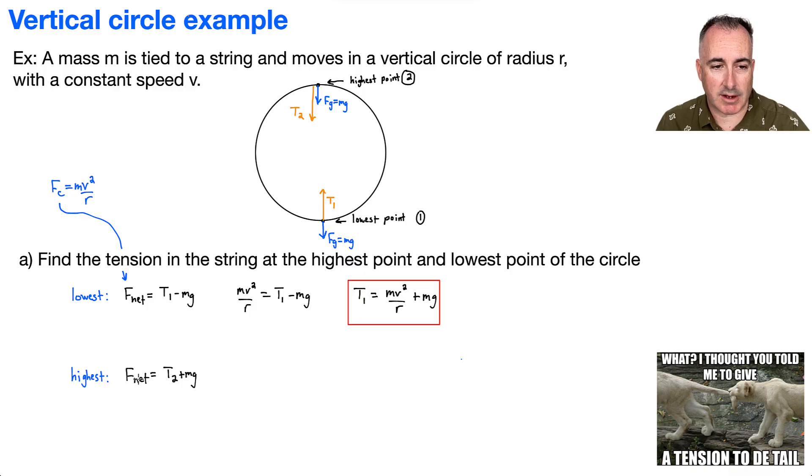And same idea here. f net becomes mv squared over r, just like we had before. And I'm going to say that equals T2 plus mg. And that means if I want to get T2 by itself, then what do I do? I have to move that plus mg. I have to shove it over to the left side. So that means it becomes a minus. So it's going to be mv squared over r minus mg.